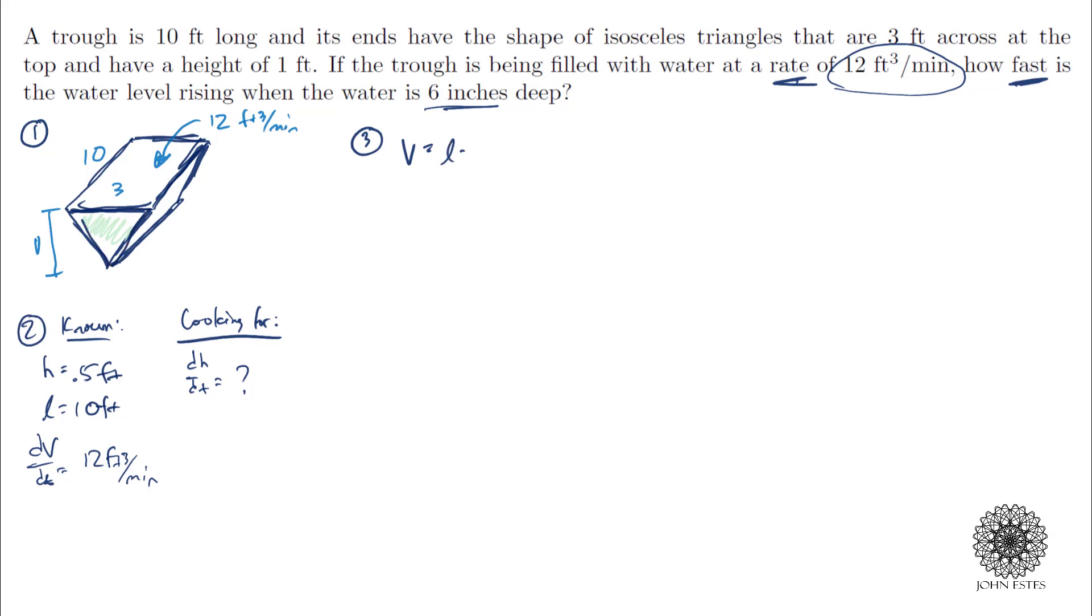So I know that the volume of this trough is length times the area of these triangles here, and the area of a triangle would be 1/2 base times height. Now the problem is I know length, length is 10, but I don't know about base. And if I try to do implicit differentiation at this point, I'm going to have to use product rule and I'm going to end up with a db/dt.